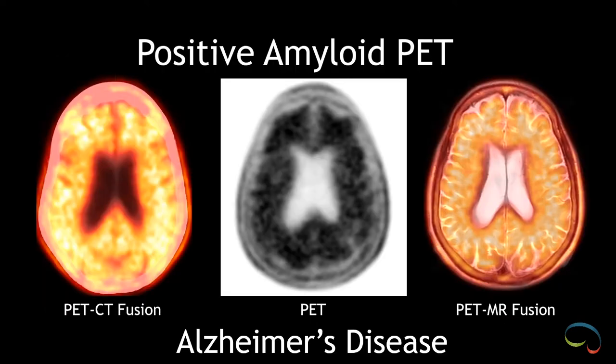This shows the amyloid PET study with PET-CT fusion on the left, the PET image in the middle, and the PET-MR fusion to an axial T2 sequence on the right.